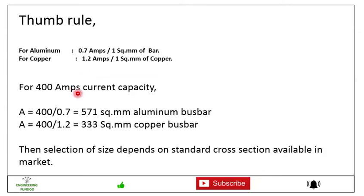So let's say for 400 amps current capacity, area required will be 400 divided by 0.7 for aluminum, that will be 571 square mm aluminum busbar. And for copper, 400 divided by 1.2, 333 square mm copper busbar. Friends, this area is not the standard one, so we have to take the next higher size.